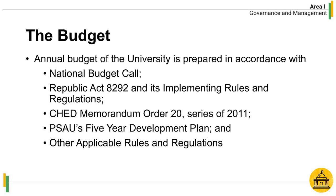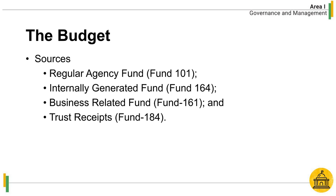The annual budget of PSAU is prepared in accordance with the following legal bases: first, the National Budget Call; second, RA-8292 and its implementing rules and regulations; third, CHED Memorandum Order No. 20, Series of 2011; fourth, PSAU's five-year development plan; and lastly, other applicable rules and regulations issued by DBM, COA, CHED, and the BOR. The sources of budget include the regular agency fund, internally generated fund, business-related fund, and trust receipts.